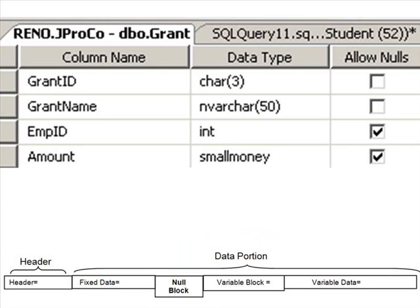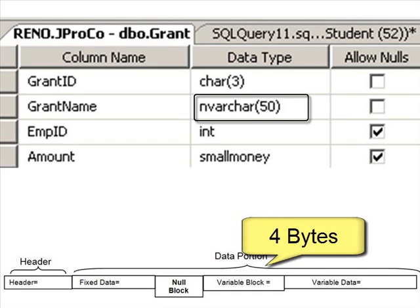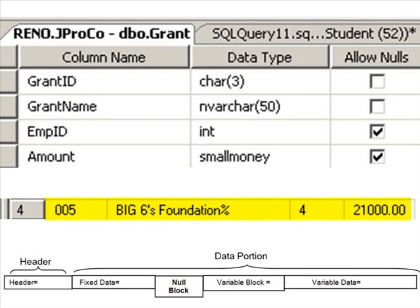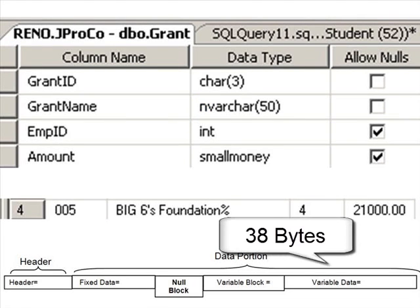The variable block: do we have any variable length data? Yes, looks like we've got one. The creation of the variable block takes two bytes, and then an additional two bytes for each field we have. Since we have one, our total size of our variable block is four. The variable length data? Well, we're going to have to see the records to know that one. Let's look at the fifth grant. We see the Big Six's Foundation percent, which has a length of 19. Is that 19 bytes, or is it more? Well, it's Unicode — nvarchar — therefore it takes up 38 bytes. So this record has 38 bytes dedicated to the variable length data.